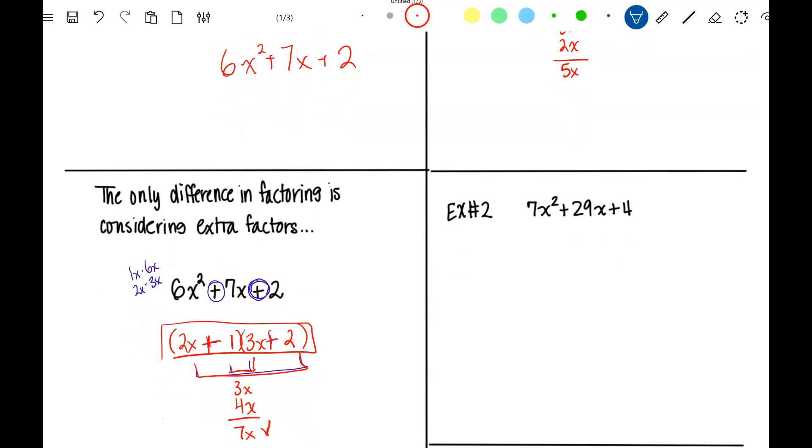Down here, example number 2, 7x squared is just 7x times x, and with 4 I could check 2 times 2 or 1 times 4. Again, I could switch those, but I'm going to do 1 and 4 because I know that's what it is. This still means the signs are the same, and they're both going to be positive.